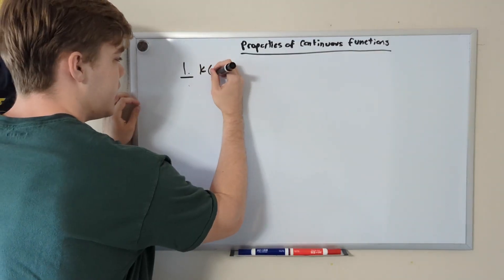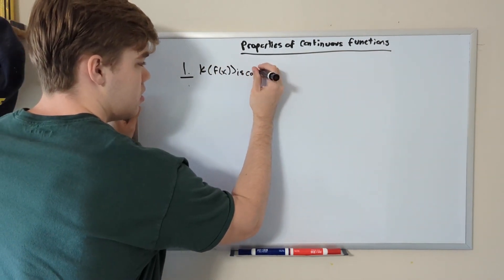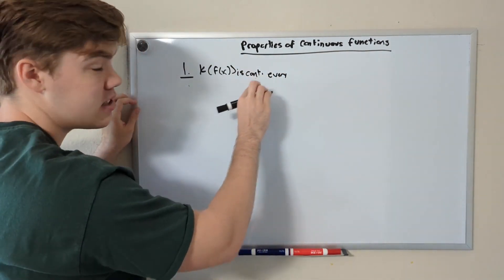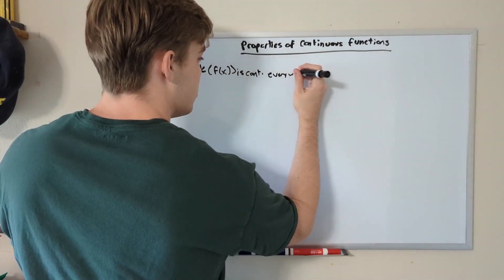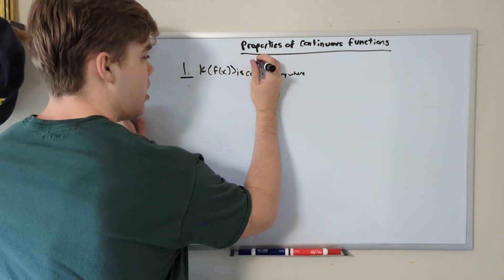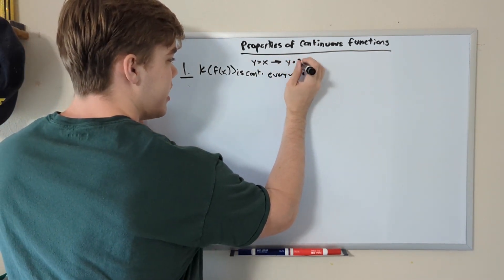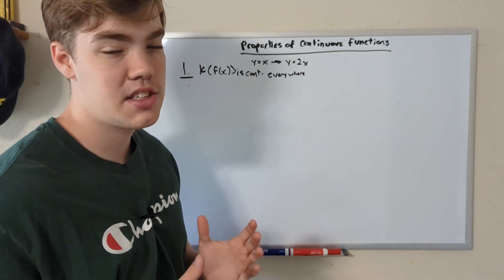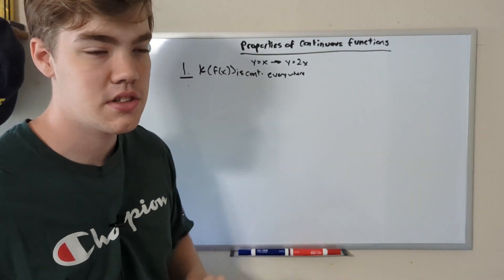Rule number one: k times f(x) is continuous everywhere. As an example, if we have the function y = x, we can change this function into y = 2x, with k being our scalar on our original function, and it's still continuous across the entire plane. This is true for all continuous functions.